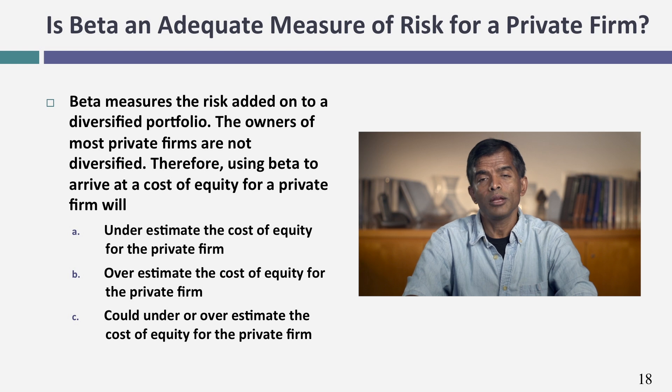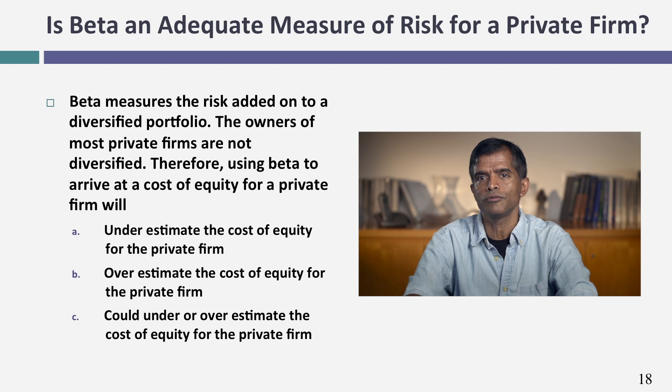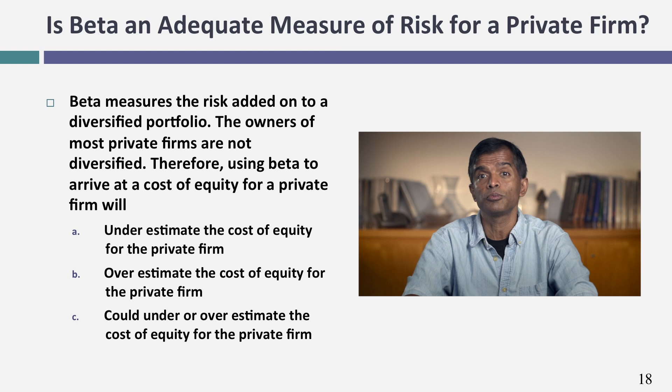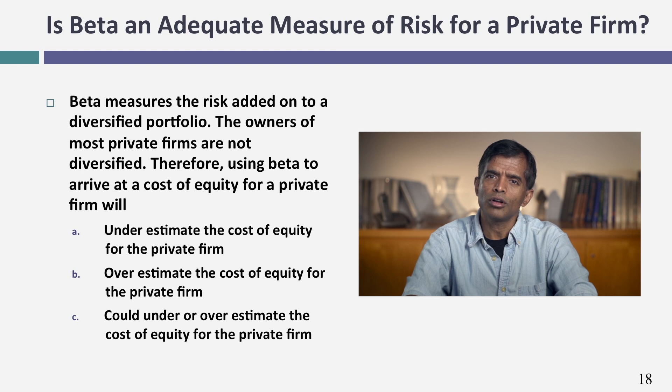But here's the catch: Bookscape is a privately-owned bookstore, and the owner is not diversified — this is true for most private business owners. Beta measures only the portion of risk you cannot diversify away. If the owner is also exposed to all the firm-specific risk because he or she is not diversified, then using a market beta will probably underestimate the true cost of equity, because we're not counting all that extra risk the owner faces.